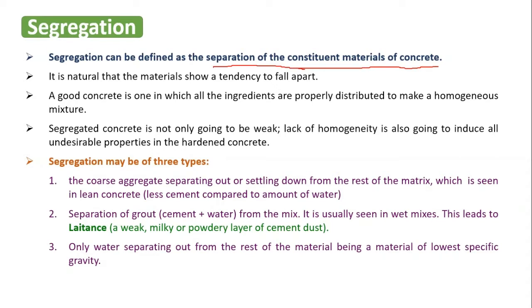Although separation is a natural tendency, we need to make sure that segregation does not happen. Segregation is going to make the concrete weak — it is going to disturb its homogeneity. Not only will it be weak, but segregation is also going to induce various undesirable properties in the concrete. There are three types of segregation.